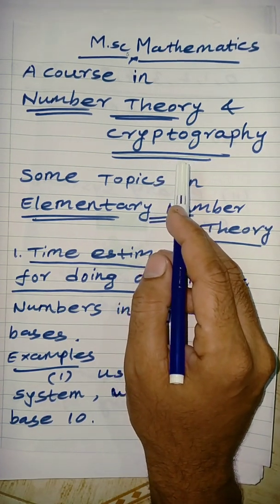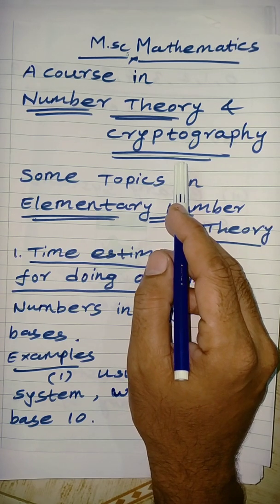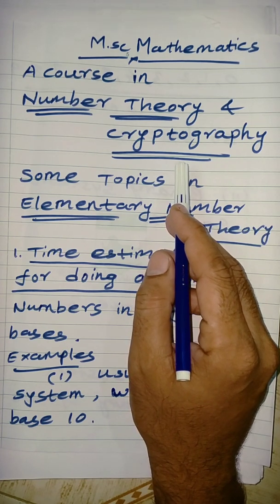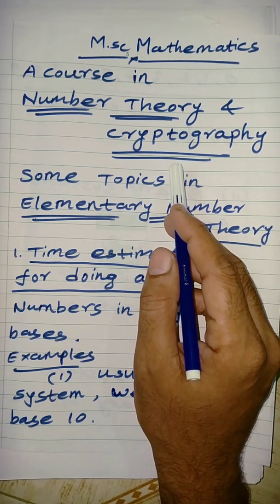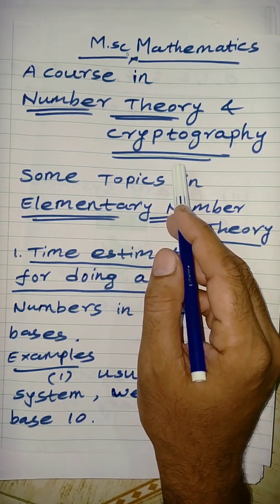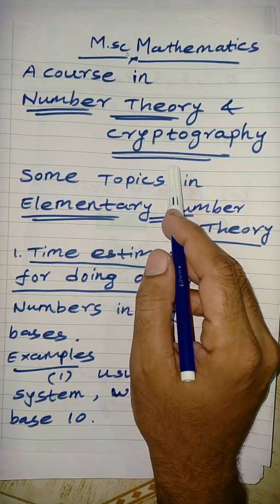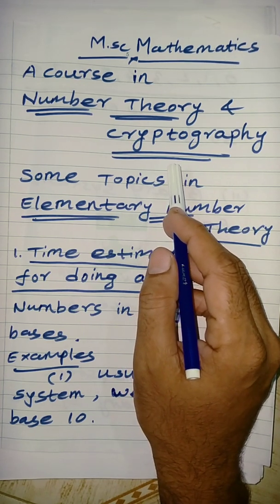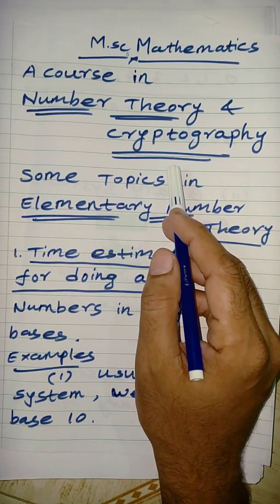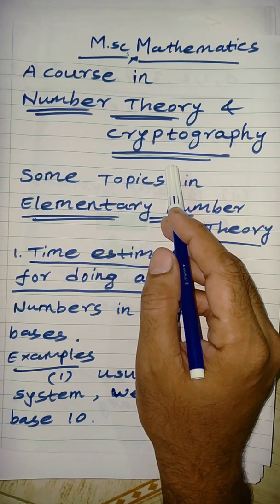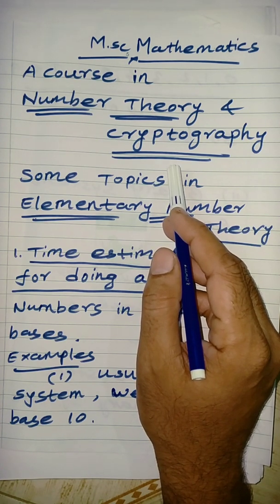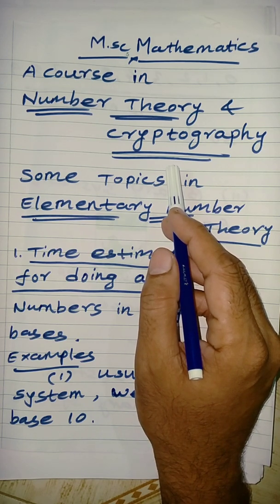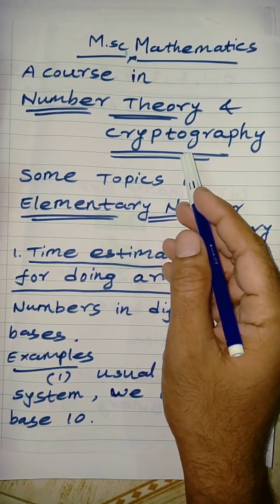So, Number Theory deals with the Number System. This includes the Natural Number System, the Integer Number System, Rational Number, Irrational Number, and then Real Numbers.